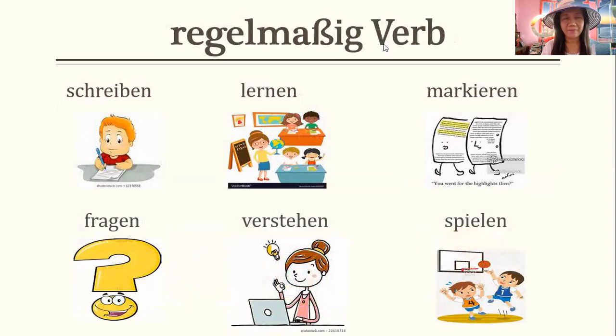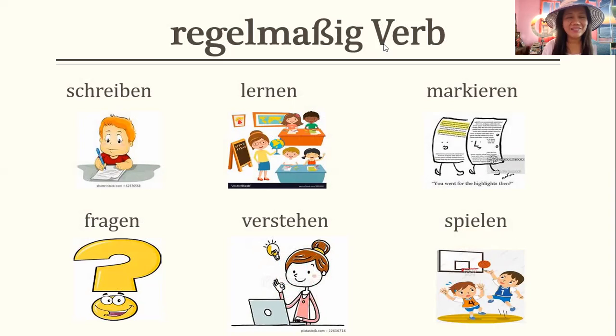Now you have to conjugate the following verbs. Even though I don't put the translation, the image would be clear to you. Schreiben means 'to write,' so I'll do the conjugation: ich schreibe, Sie schreiben, er schreibt, sie schreibt, wir schreiben, sie schreiben.